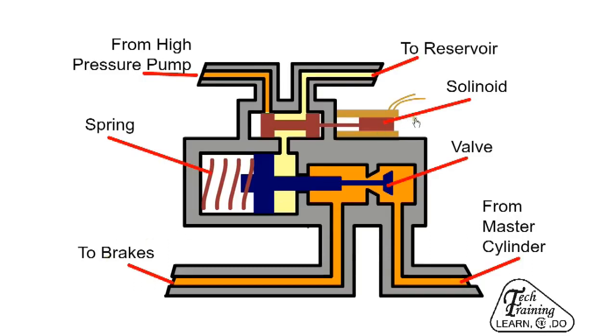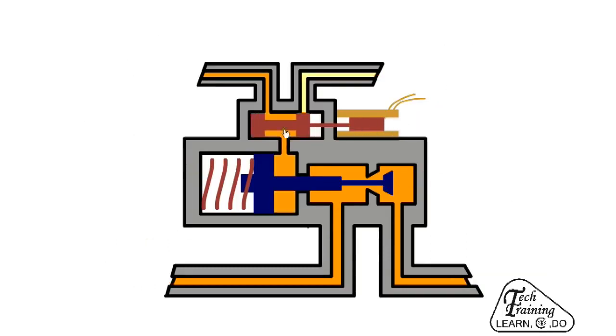When the ECU detects that a wheel is on the verge of locking, it activates the ABS solenoid. The solenoid moves to the left and allows through the high pressure fluid from the pump. The high pressure fluid exerts a force on the piston and closes the valve against the spring pressure. When the piston moves to the left, it also allows more place for the brake fluid and reduces its pressure, releasing the brakes.